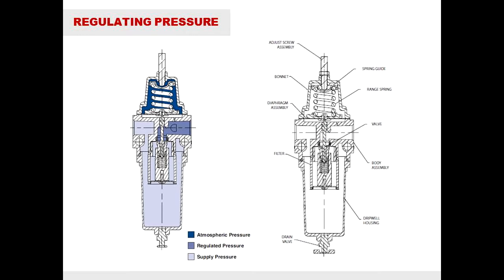The range and set point of the regulator is determined by the range spring. The spring coefficient of the spring determines the range and how far the spring is compressed determines the set point. This set point can be field adjustable via the adjustment screw located at the top of the housing.